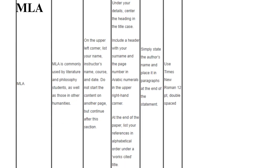MLA is commonly used by literature and philosophy students, as well as those in other humanities. On the upper left corner, list your name, instructor's name, course, and date. Do not start the content on another page, but continue after this section. Under your details, center the heading in title case. Include a header with your surname and the page number in Arabic numerals in the upper right-hand corner. At the end of the paper, list your references in alphabetical order under a Works Cited title. Simply state the author's name and place it in paragraphs at the end of the statement. Use Times New Roman 12 points, double spaced.